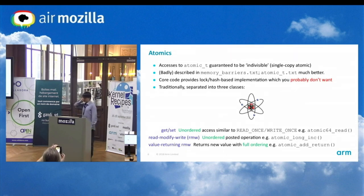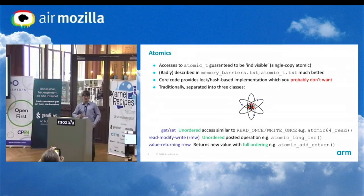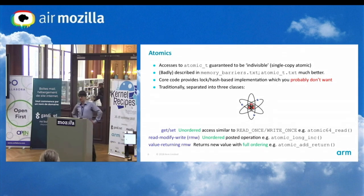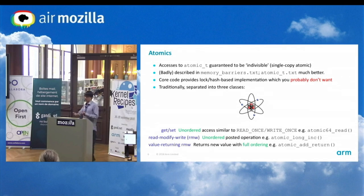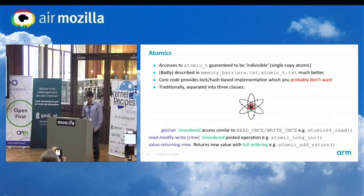Atomics: we have atomic_t, atomic_long_t, atomic64_t. They're guaranteed to be indivisible. Memory model people call this single-copy atomic — which is nothing like multi-copy atomic; memory-ordering people are really not very good at terminology. It means if you access this thing you're not going to get tearing. If you do a set or store and someone else does a load or get on that thing, it'll either see your store or it'll see the old value. memory-barriers.txt doesn't really describe this stuff too well, so we've now got atomic_t.txt, which is much better — I recommend you go there for the gory details.